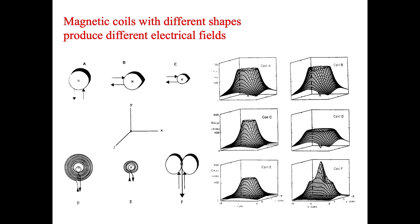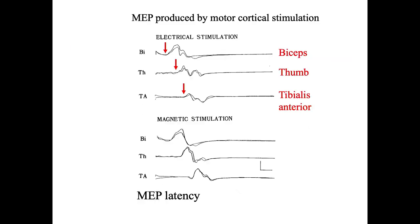The figure-of-eight coil is now the most widely used in TMS studies. This slide shows example recordings with a single stimulation to a single site recorded in different muscles. The top shows electrical stimulation and the bottom shows magnetic stimulation. In early years, electrical stimulation was used to stimulate the brain.